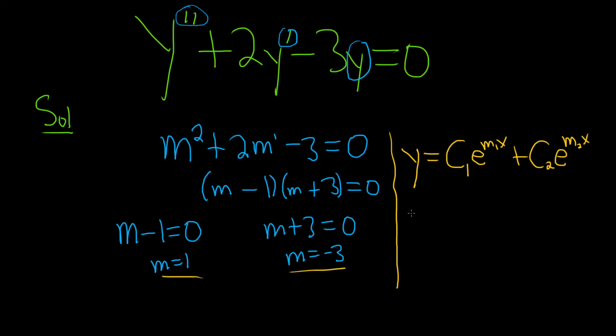And it doesn't matter which one you put first. So it'll be C1 e to the 1 times x, so that's just e to the x, plus C2 e to the negative 3 times x. And that would be the final answer.